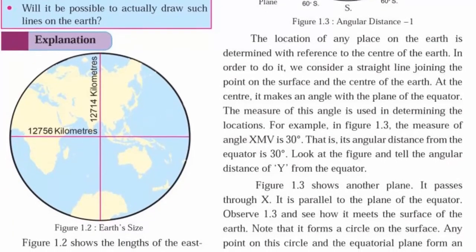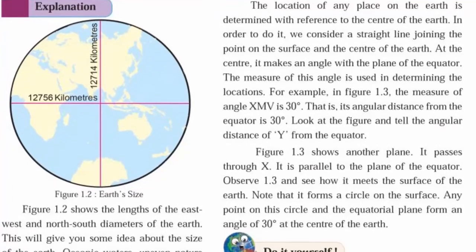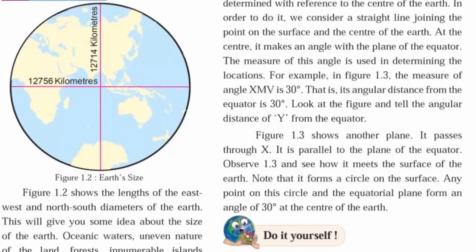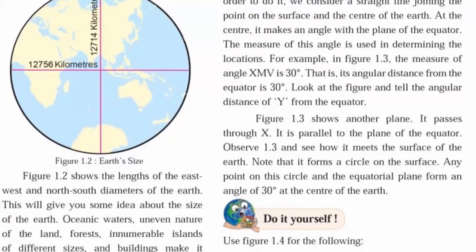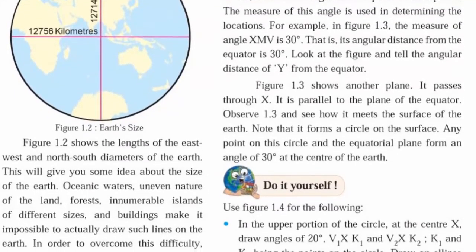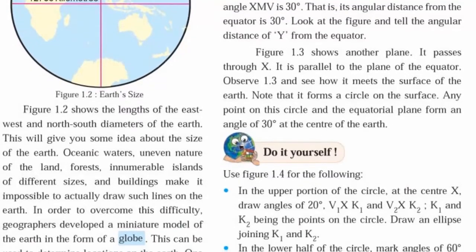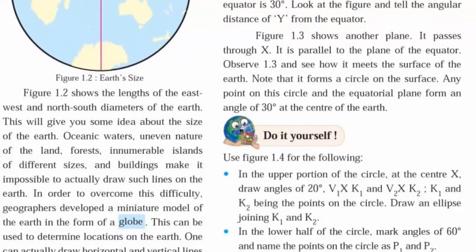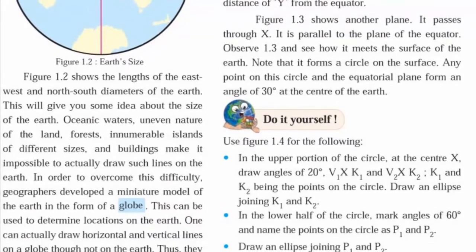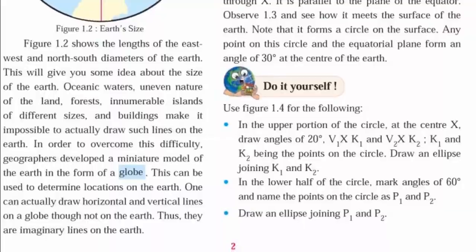Parallels of latitudes. The east-west circles created at some angular distance from the centre of the earth are called parallels of latitudes. The angular distances of all parallels are measured in degrees and are called latitudes. Parallels of latitudes are imaginary horizontal lines.